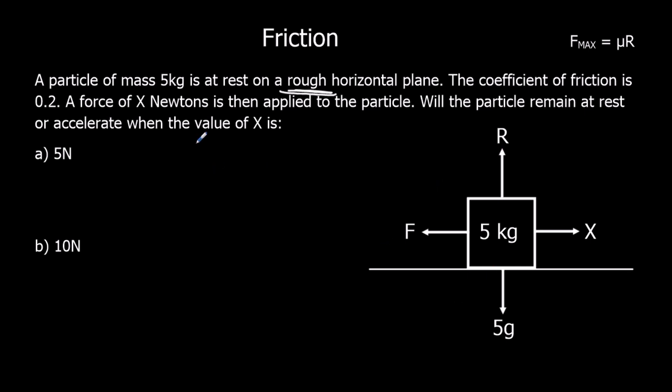It's not moving up and down, so the normal reaction force R must be 5g. That's the force needed to stop it moving up and down. The forces have to be equal. So R is 5g. Friction max, the maximum value of friction, is μR, which is 0.2 times 5g, which is g, or 9.8.